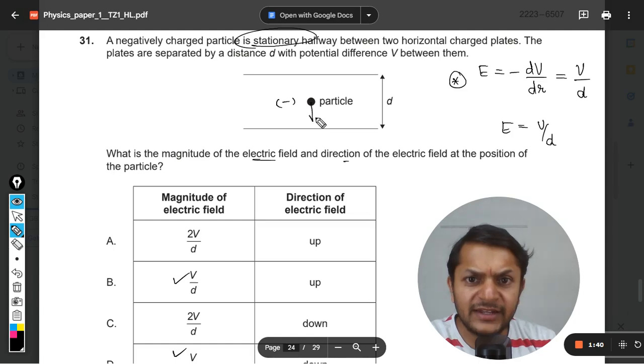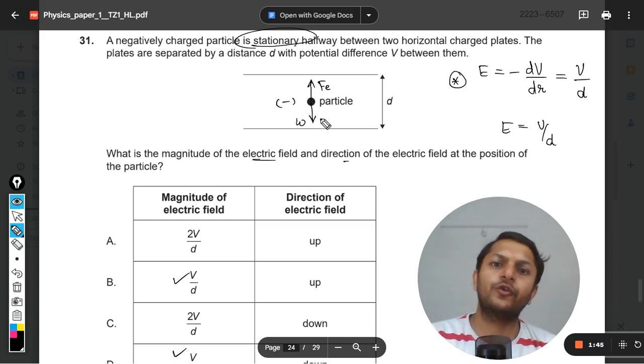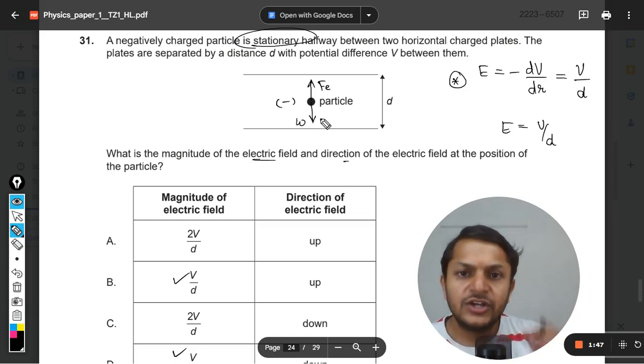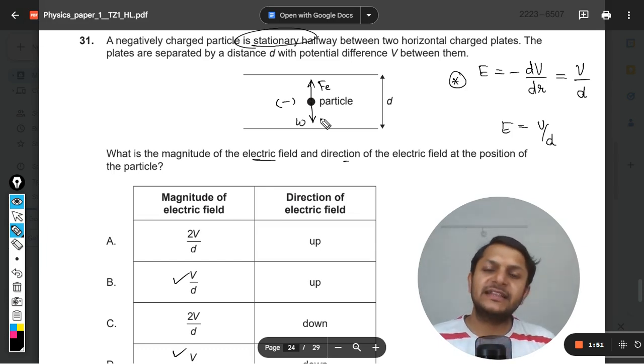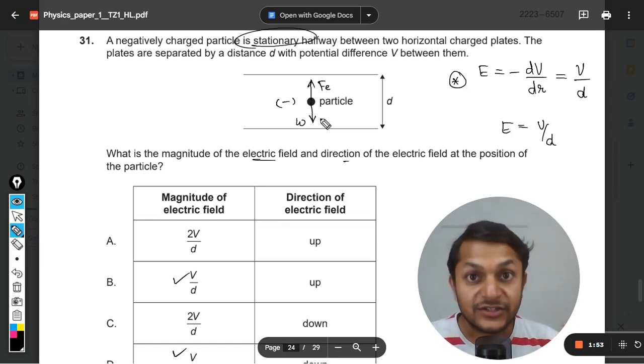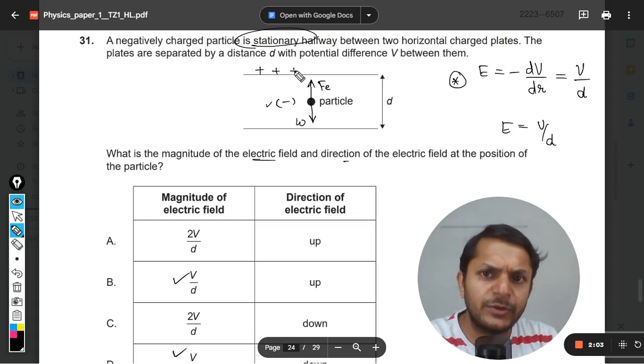And obviously, it will be experiencing an electric force in the upward direction. These two forces are actually balancing each other out. And so we can say that the particle is stationary. Now, if the particle is stationary and the force is in the upward direction, obviously we can understand this because this is negatively charged.